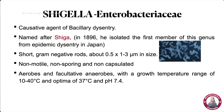The name Shigella comes from the word 'Shiga.' In 1896, there was an outbreak of dysentery in Japan, and a physician named Kiyoshi Shiga was investigating the cause. He isolated a bacteria from a stool sample of a patient and named it Bacillus dysenteriae. Later, this bacteria was renamed Shigella dysenteriae type 1.